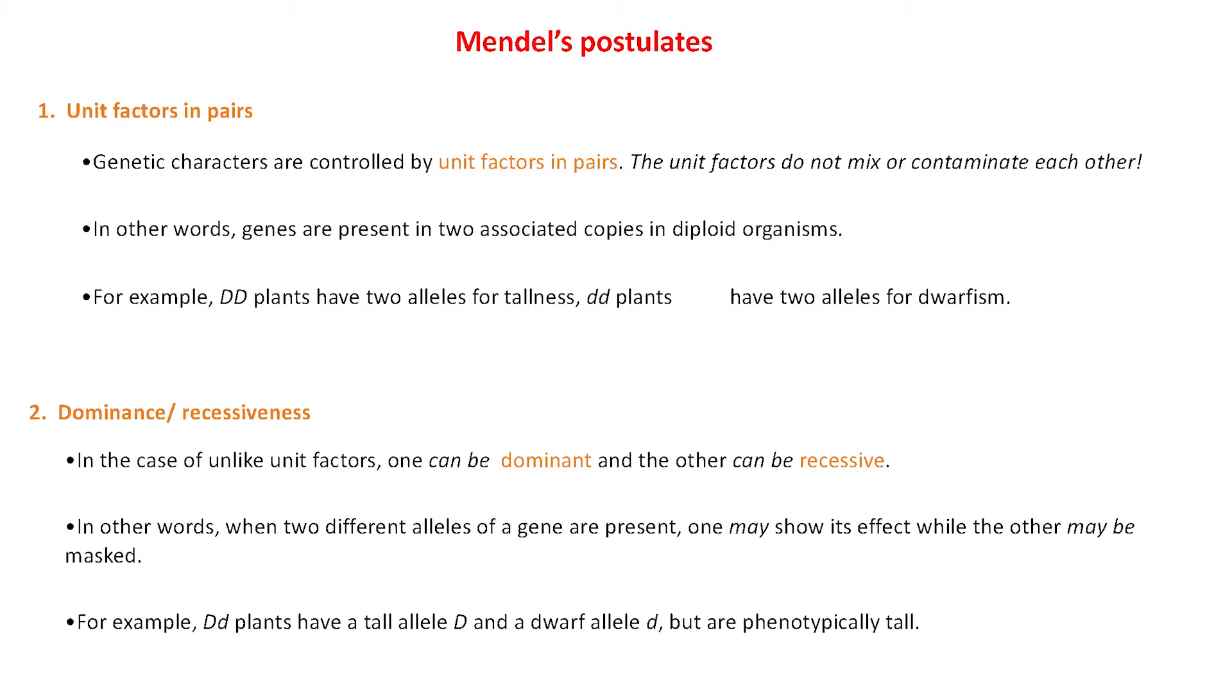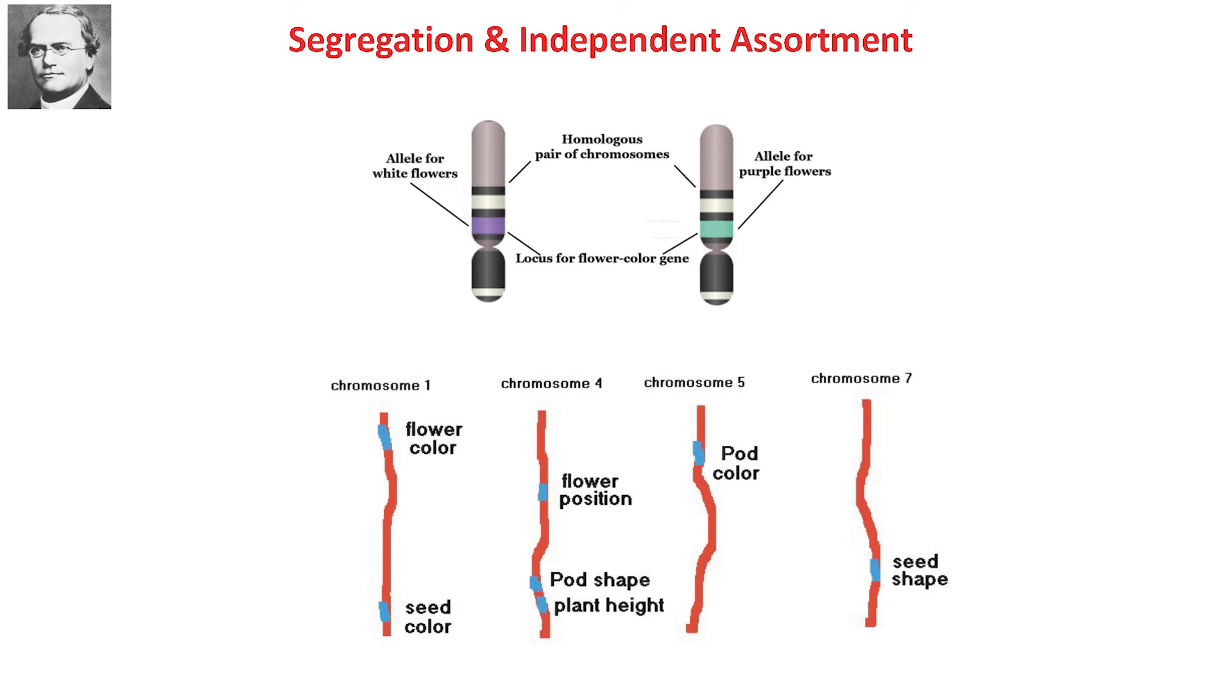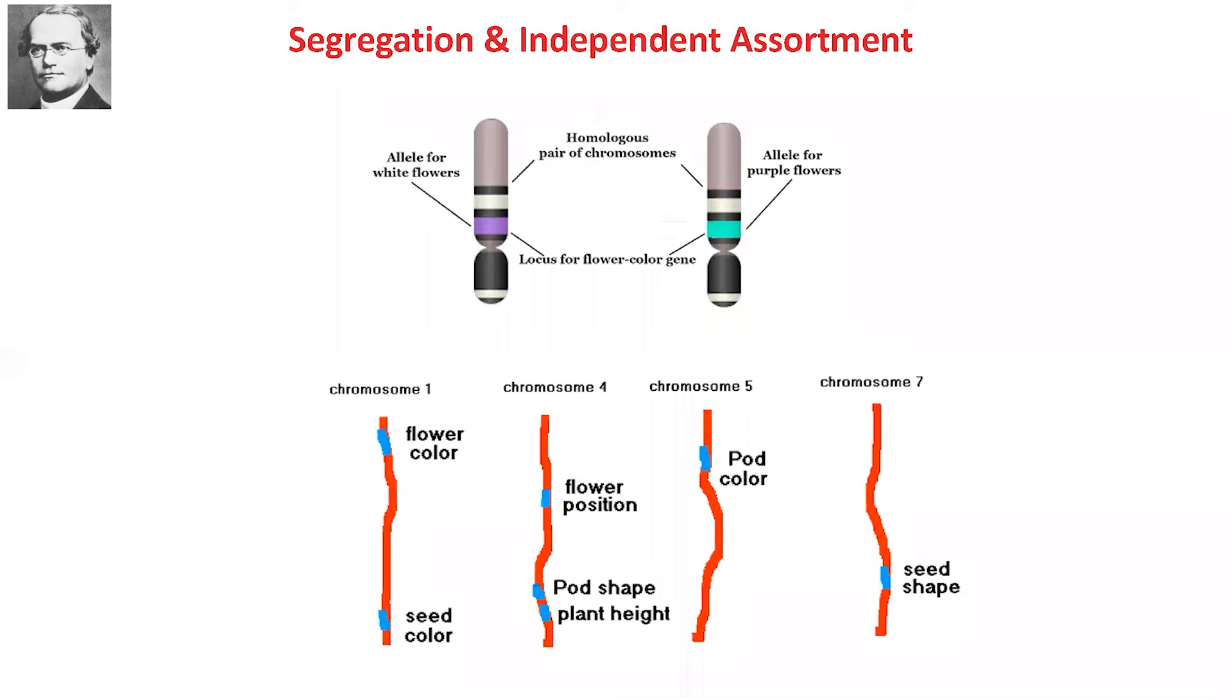And Mendel's postulates, which is segregation, which is basically to do with alleles separating. Independent assortment, which is to do with genes which are on different chromosomes. If they are on different chromosomes, they will assort independently.